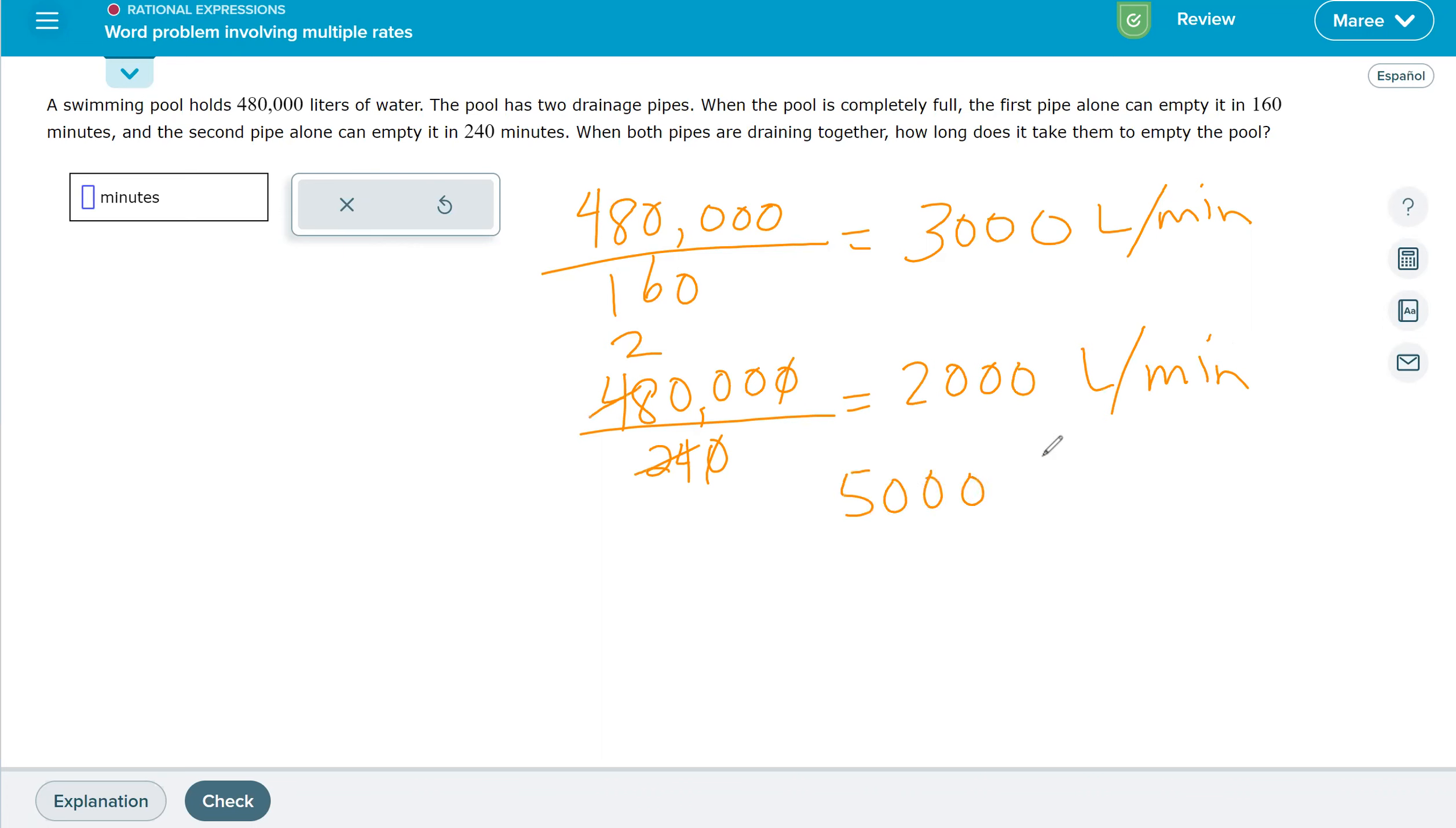So 5,000 together. We're going to do 480,000 divided by 5,000.